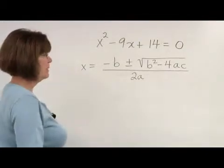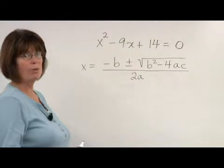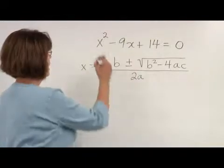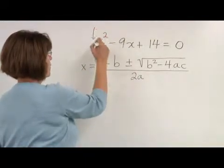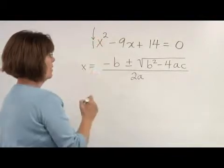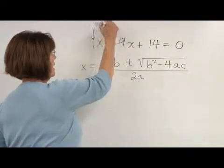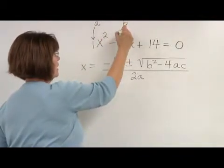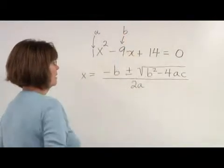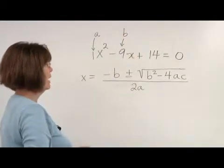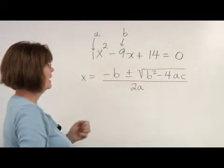The a's, b's, and c's are the coefficients of each term. a is the coefficient of the squared term, in this case one. b is the coefficient of the first degree term, or the x, which in this case is negative 9.